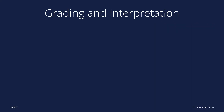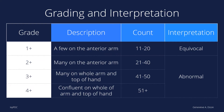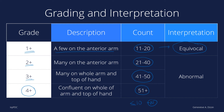After counting the petechiae present after the procedure, we proceed with the grading and interpretation. If 11 to 20 petechiae are present, a grade of 1+ is given, described as a few on the anterior arm. If 21 to 40 are counted, a grade of 2+ is given. If 41 to 50, a grade of 3+. And if 51 or above, the highest grade of 4+ is given. Counts of 10 or fewer are normal; 11 to 20 is equivocal; and 2+ to 4+ gives an abnormal result.